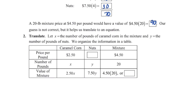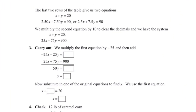Let x be pounds of caramel corn and y be pounds of nuts. Organizing our information: caramel corn is $2.50 per pound, nuts are $7.50 per pound, and we need a total of 20 pounds. That translates to two equations: x plus y equals 20, and 2.50x plus 7.50y equals 90 (since 4.50 times 20 equals 90). Now that we have two equations, we can solve the system.